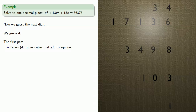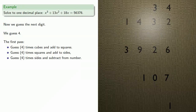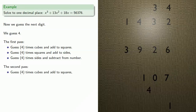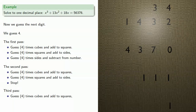Guess times cubes and add to squares. Guess times squares and add to sides. We make additional passes with each pass stopping one place short of the previous one. Second pass: guess times cubes and add to squares, and add to sides, and stop. Third pass: guess times cubes and add to squares, and stop.